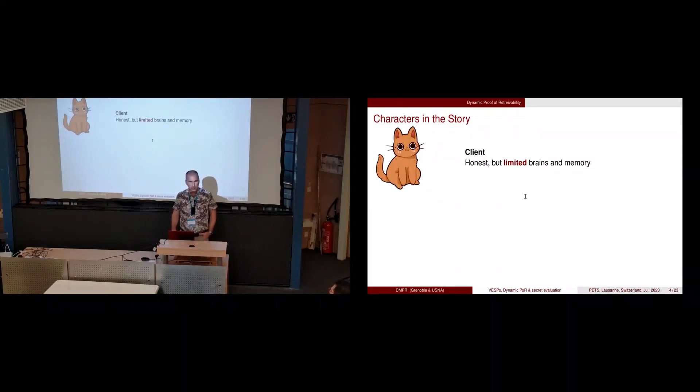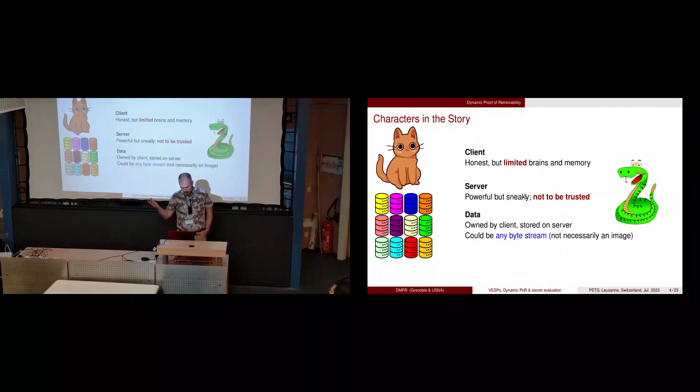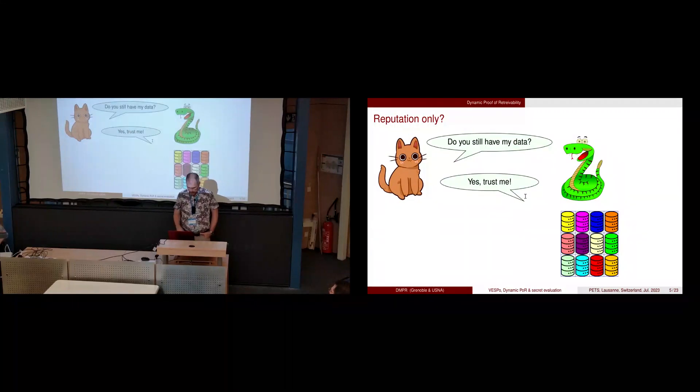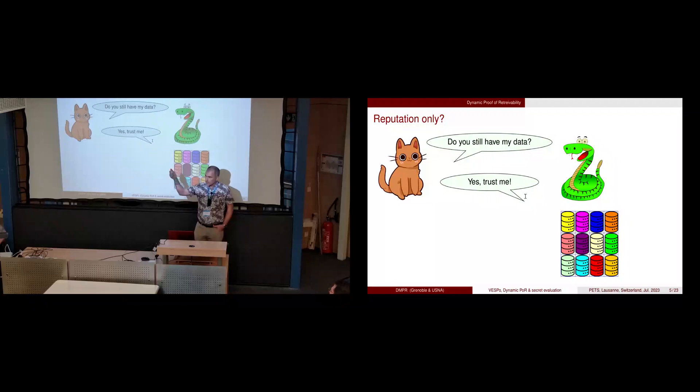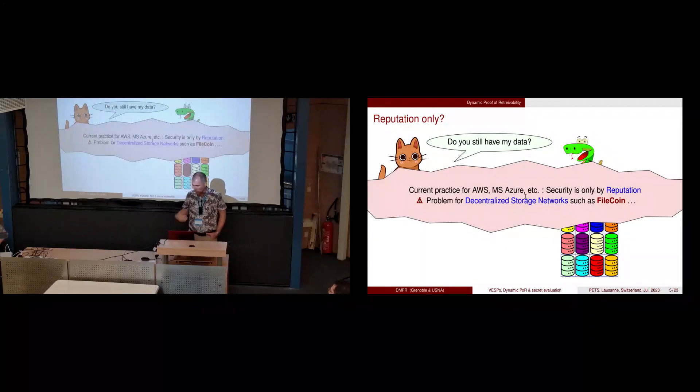We have clients with limited resources, a server that we don't trust in the malicious setting, and data that the client wants to outsource. We want to be sure it's still there. The first way is by reputation of the server, which won't bother to modify our data. This does not work in decentralized storage networks or if the server is a newcomer with no reputation.